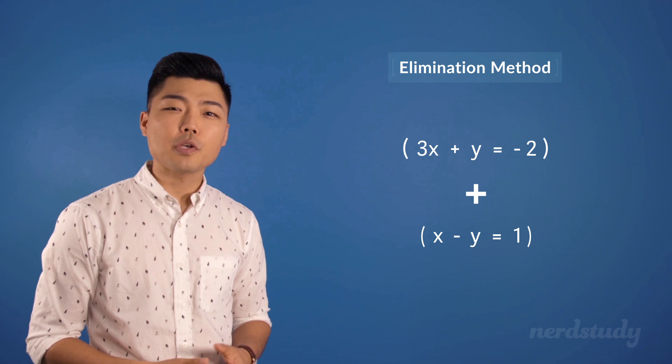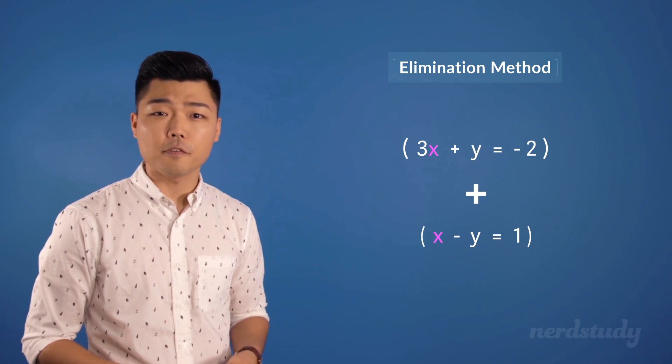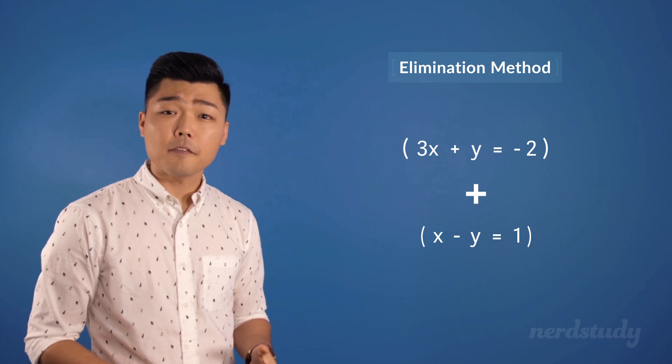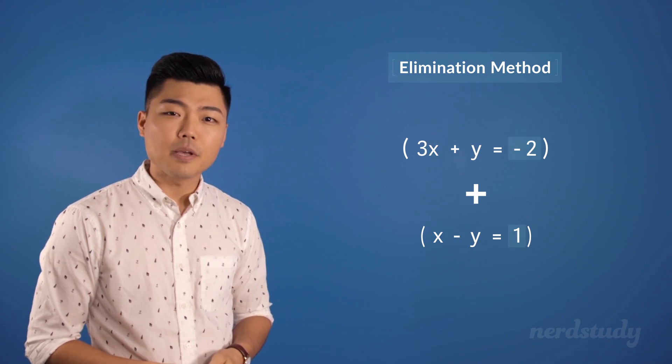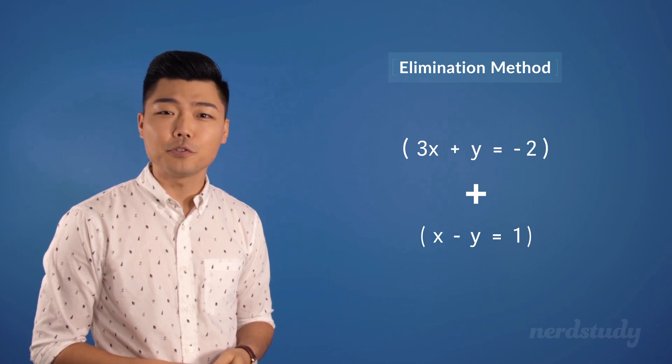So notice how we added the two equations to get rid of one of the variables. That left us with an equation with one variable and a value, making it easy for us to find our solution.